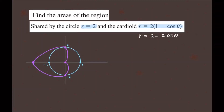If you need help sketching these curves, I'll leave a link in the description. The region shared by the two curves is this particular shaded region. Also note this point here is negative 4.